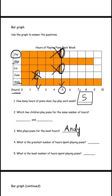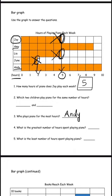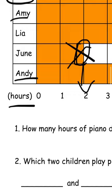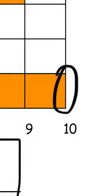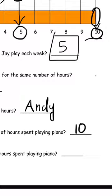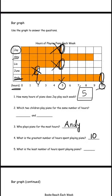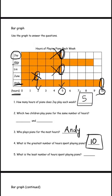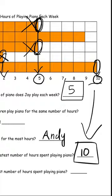Number 4 is basically the same thing. Number 4 is asking, what is the greatest number of hours spent playing piano? We just said that Andy plays the most. If you look at Andy, how many hours does he play? It ends at 10 right over here — it fills the whole thing. So he plays 10 hours. The greatest number of hours is 10 hours, because Andy plays the most, which is 10 hours. So 10 is the answer for number 4.